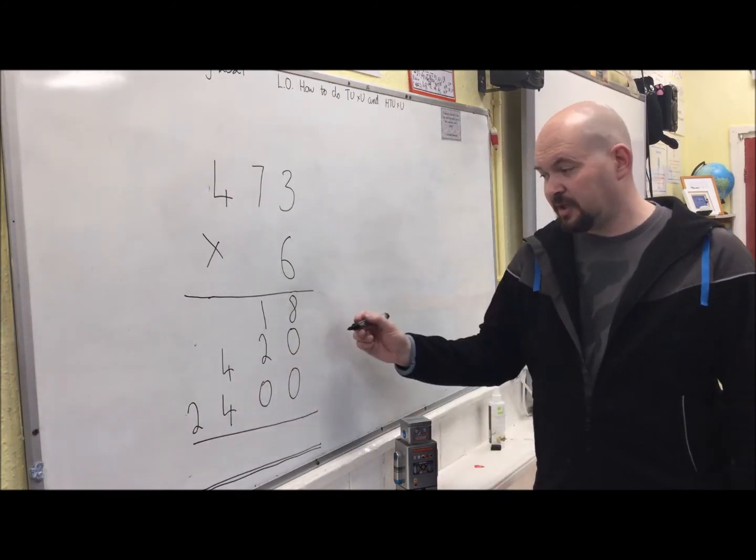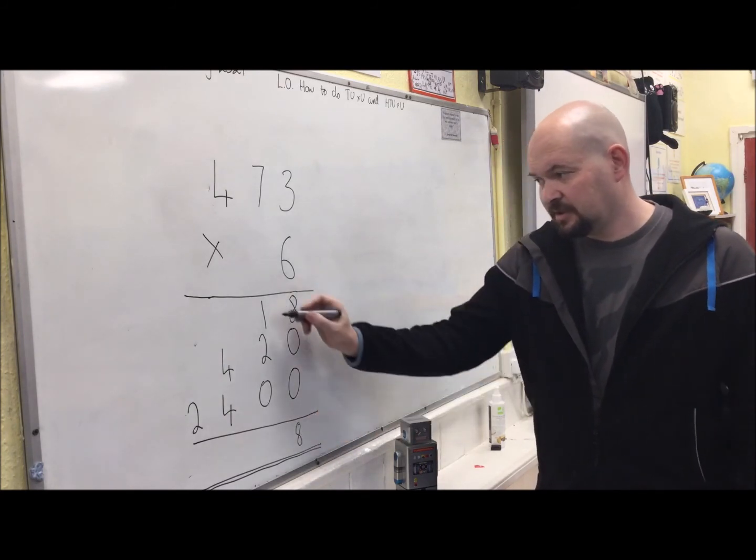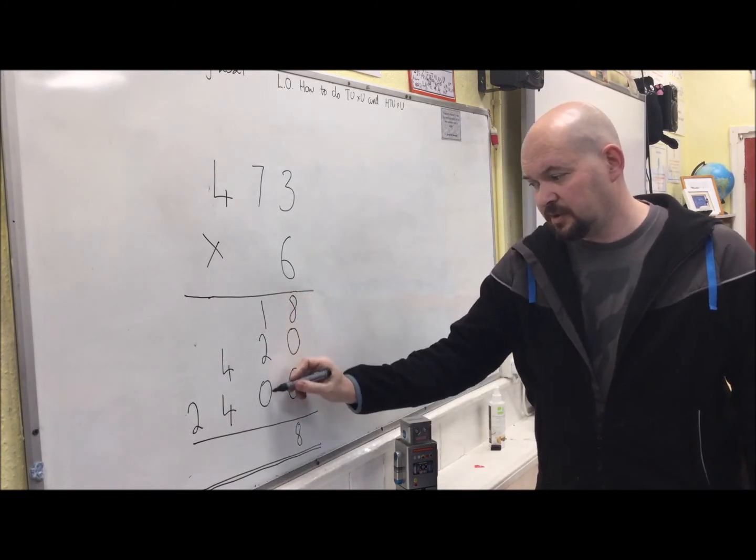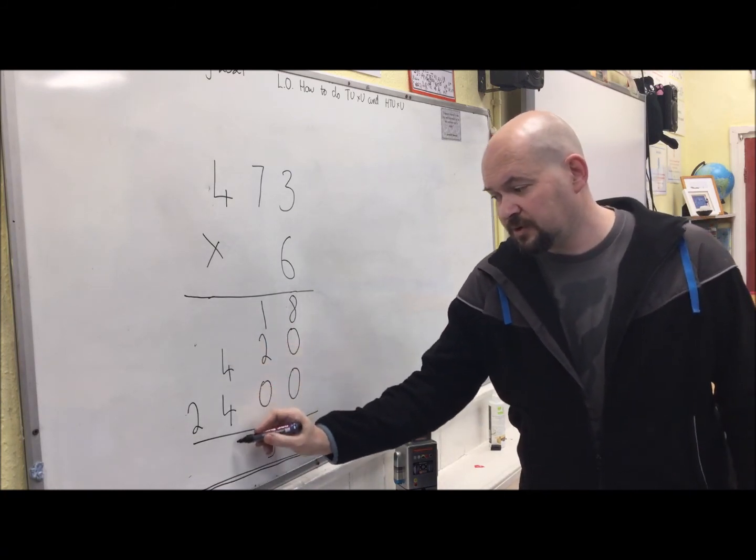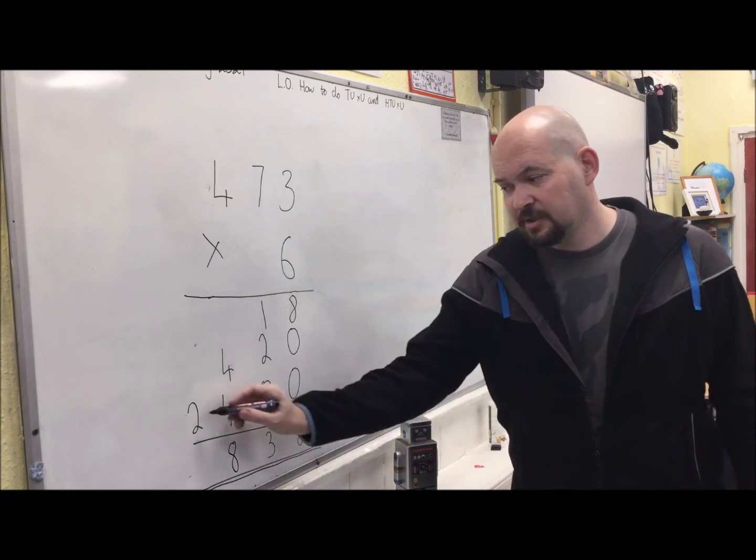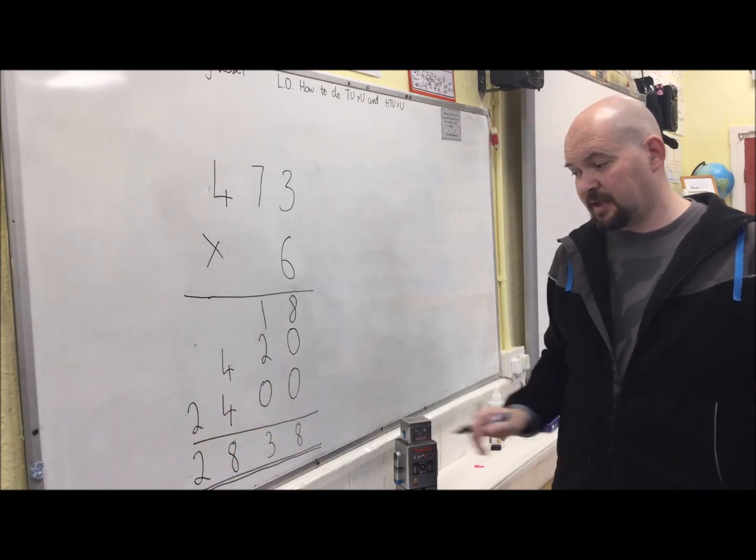Add them all together at the end. 8 and nothing and nothing makes 8. 1 and 2 and nothing is 3 or 30. 400 and 400 makes 800. 2,000 and nothing makes 2,000. Answer 2,838.